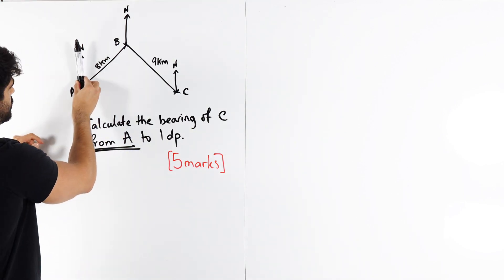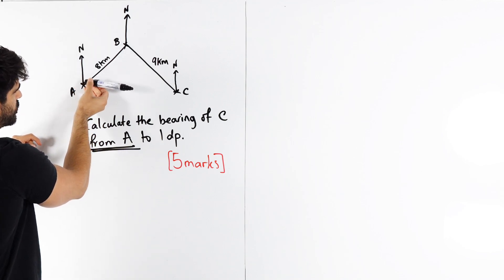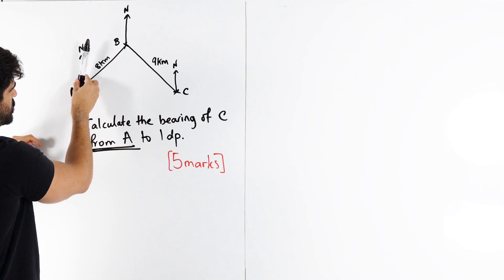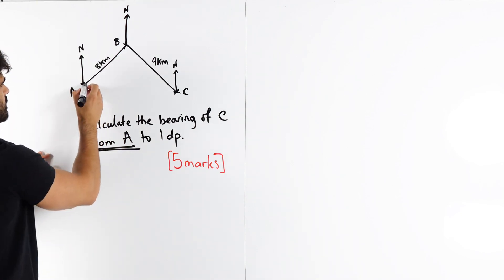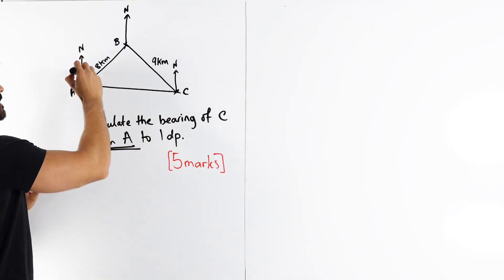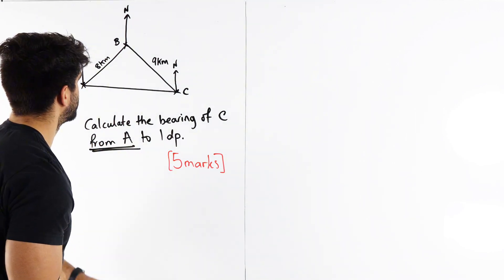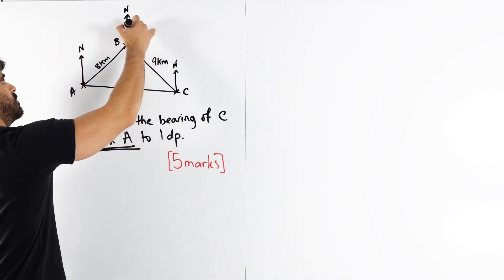So how much do you need to rotate the north line so that it is then pointing towards C? So how much do you need to rotate this so that it's then pointing at C? So we're going to draw a line from A to C. What a beautiful straight line that is. And I need this whole angle here.